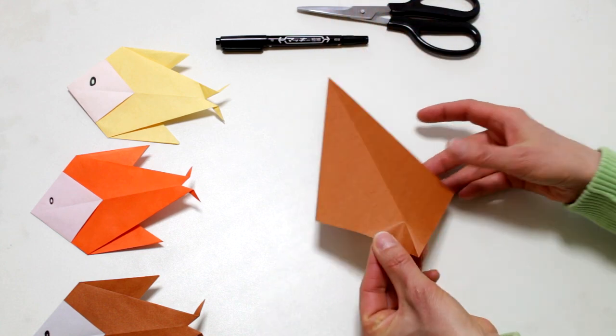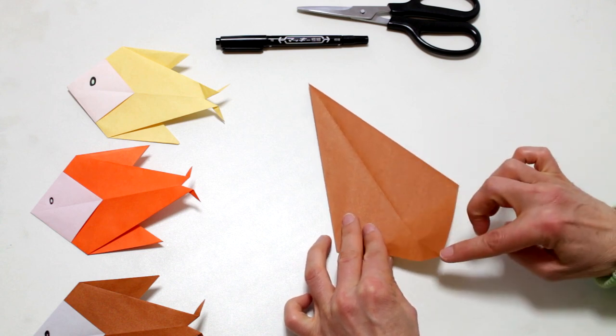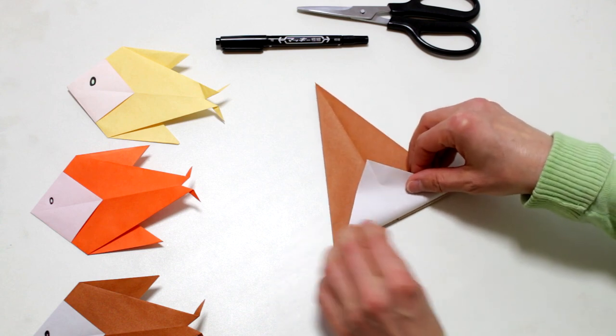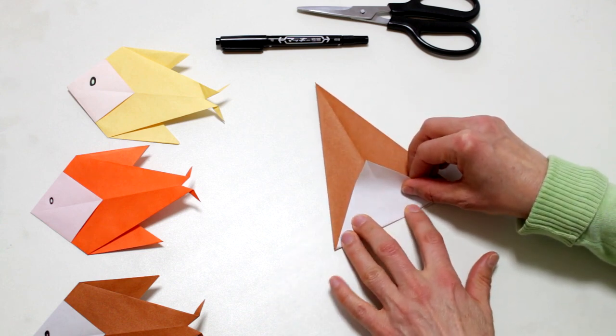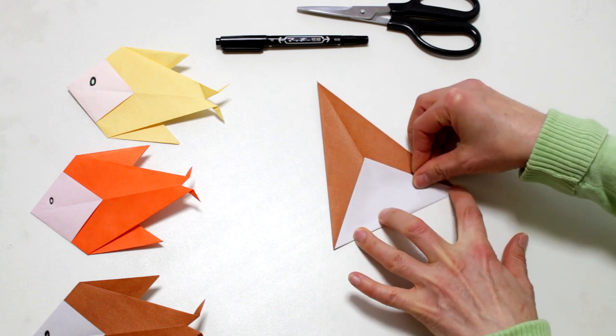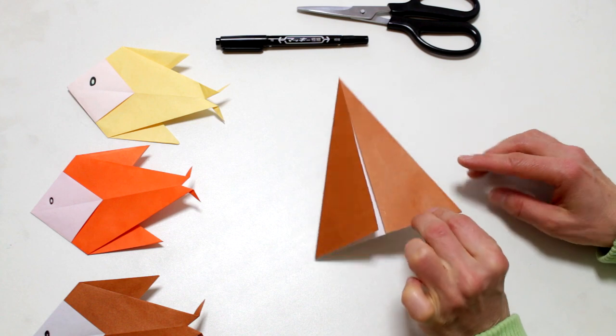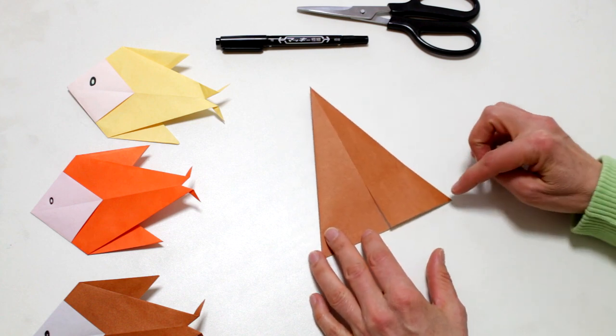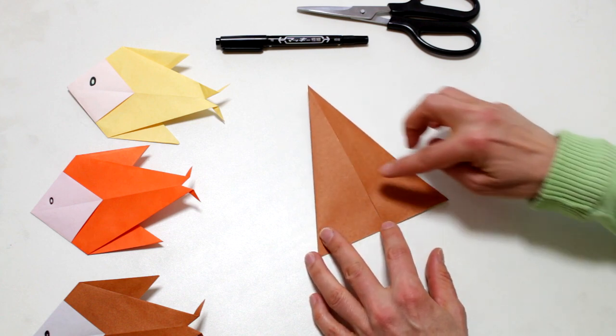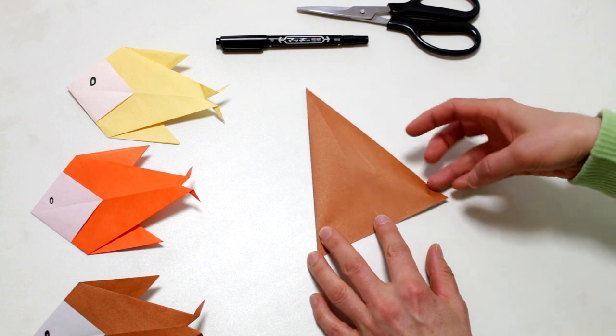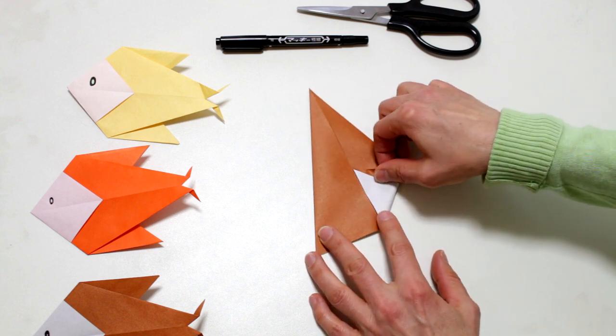Turn the model over and we're going to bring this corner up and then turn the model over again. Now we're going to bring this corner to the center line and fold.